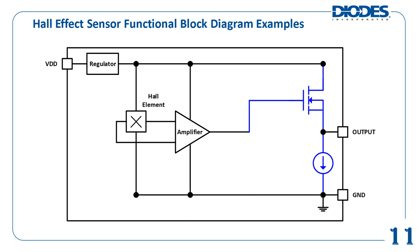A simplified example functional block diagram of a linear Hall Effect sensor is shown. As before with the Hall Effect switch, a magnetic field will vary the Hall voltage generated from the Hall element. The amplifier amplifies the Hall voltage. However, this time the amplifier directly controls the output FET's current. With the output stage being a FET in series with a constant current source, this configuration allows the output of the linear Hall Effect sensor to be an analog voltage signal.